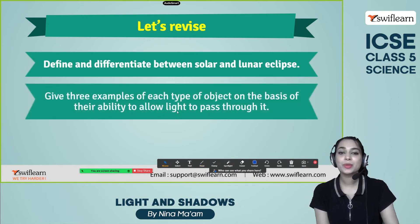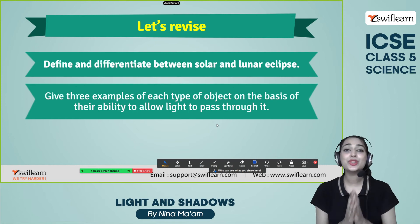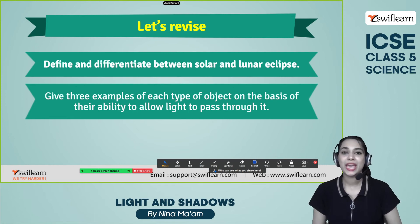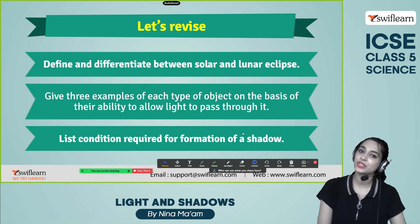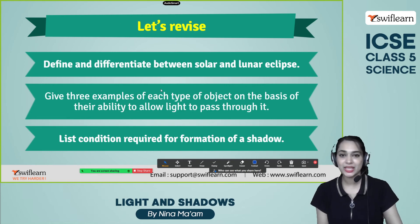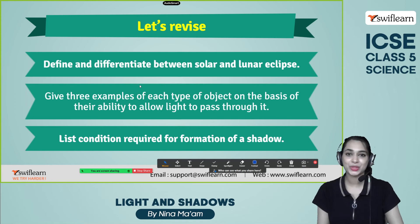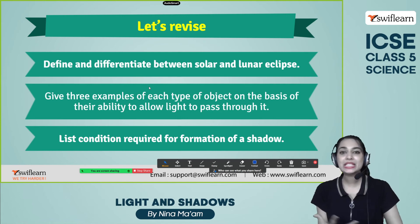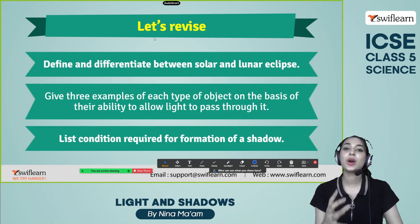Now give three examples of each type of object based on their ability to allow light to pass through. Please comment below in the chat box. Also, let's revise the conditions required for the formation of a shadow — we need three conditions. Recall the picture of a man walking on a road: the man is the opaque object, the sunny day provides the source of light, and the road is the screen where the shadow appears. These are the three favorable conditions for the formation of a shadow.